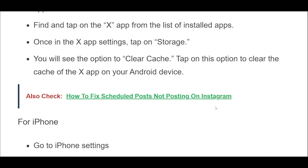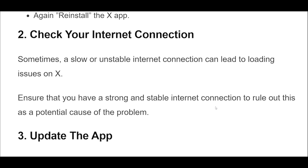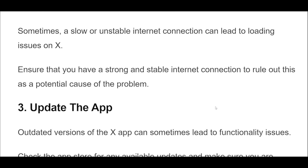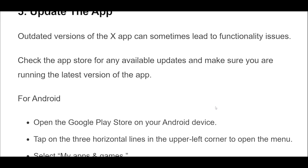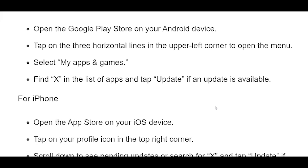Outdated versions of the X app can sometimes lead to functionality issues. Check the App Store for any available updates and make sure you are running the latest version of the app. For Android, open the Google Play Store, tap on the three horizontal lines in the upper left corner to open the menu, select My Apps and Games, find X in the list and tap Update if an update is available.